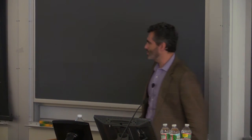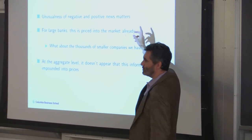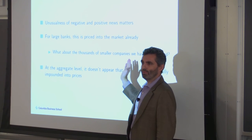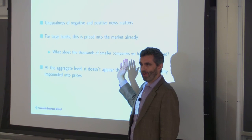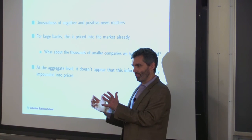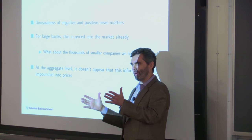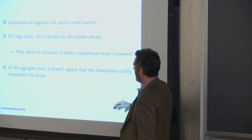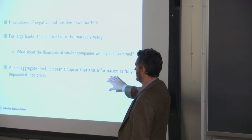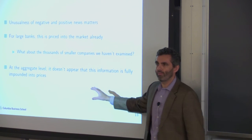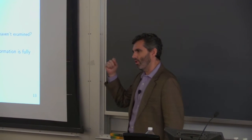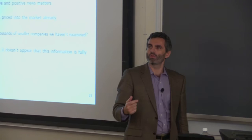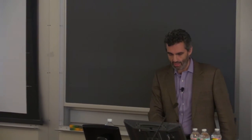This is a very interesting result: by looking at news and digesting it in the way we suggest, you are actually forecasting future levels of VIX or realized volatility, and to the extent those forecast future economic stress, you're able to say something about future economic stress by looking at unusualness of news. To conclude: unusualness of negative and positive news matters for large banks — though it's priced in for those. For thousands of other less-followed companies, and at a time horizon beyond monthly effects, we don't yet know the answer. At the aggregate level, this information is not fully impounded into prices, so automated monitoring of news lets us learn something about the economy we wouldn't otherwise know.